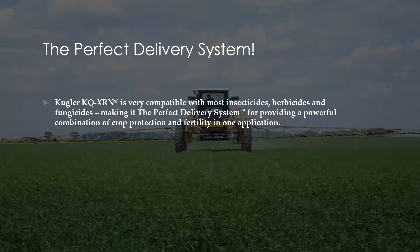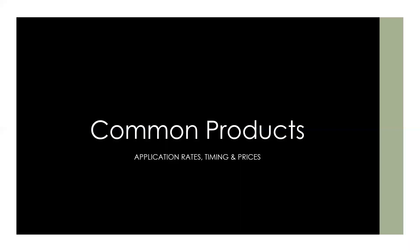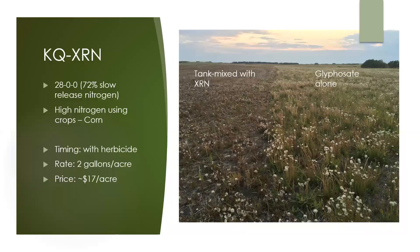XRN is compatible with most chemicals, making it the perfect delivery system. You get faster and improved weed control while giving your crop a nutrient boost all in one application. XRN is a straight 28% nitrogen with 72% slow release. It fits well with high nitrogen using crops like corn. It should be applied at herbicide timing at 2 gallons an acre, which works out to roughly $17 an acre. The picture on the right shows a field sprayed with glyphosate — the entire field was sprayed, but the left side was tank mixed with half a gallon per acre of XRN. This picture is 7 days after application, and there's quite a noticeable difference in the speed of the weed kill.